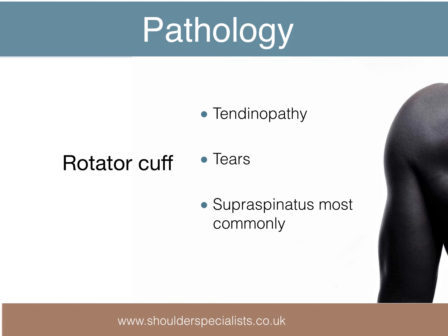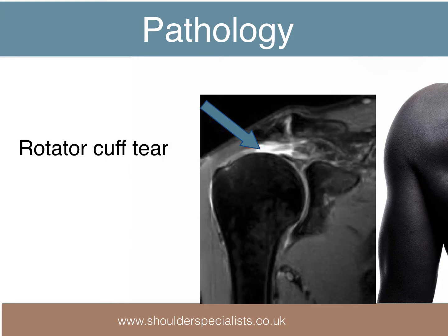The rotator cuff can become inflamed, or tendinopathic, often as a result of impingement, or can tear, either because of chronic degeneration, or acutely due to trauma. The supraspinatus is the most commonly affected tendon of the rotator cuff. Rotator cuff tears can be seen both on ultrasound and plain MRI scans. An MRI, however, will give more detail about the nature of the tear and its likely repairability.